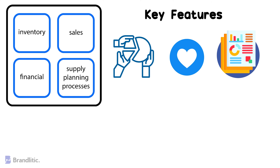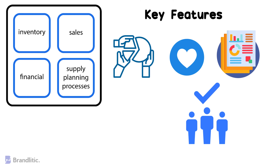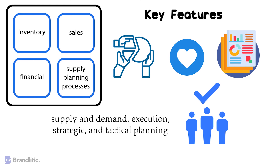To make such execution possible, plans are approved by executives at all levels of management, which makes it easier to align supply and demand, execution, strategic, and tactical planning of a business.